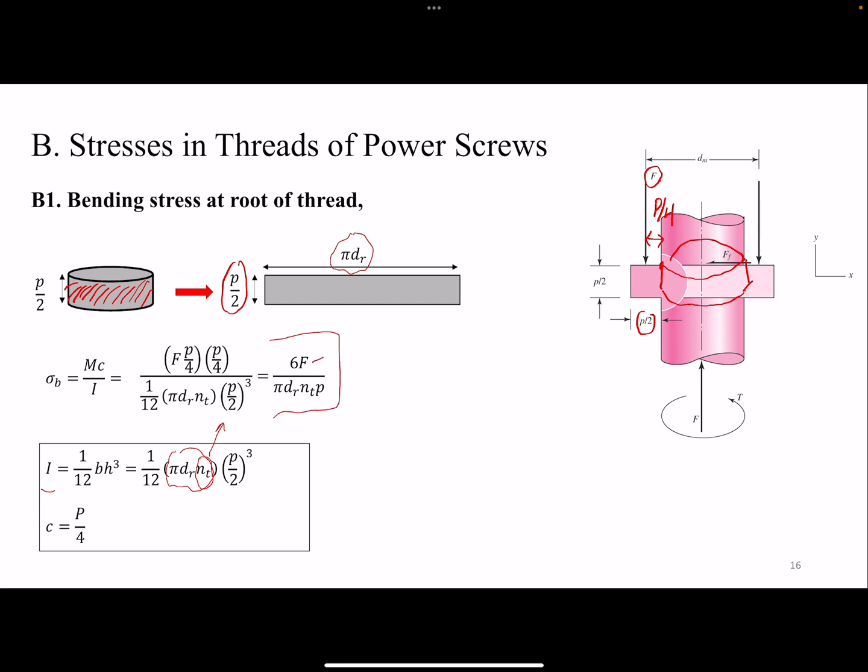F is the clamping force or the force that we are lifting. P is the pitch. Nt is the number of threads involved. Dr is the root diameter. And of course, π.